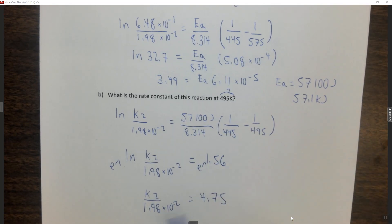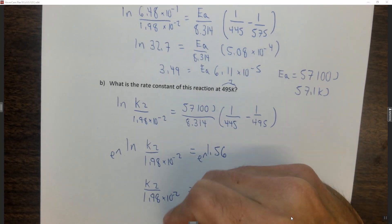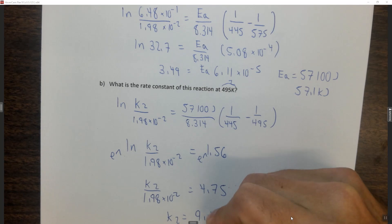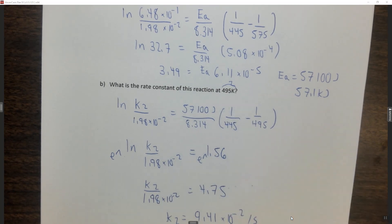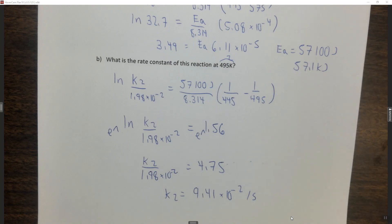We then just cross multiply these two numbers together, and we get that k2 is equal to 9.41 times 10 to the minus 2, and that's per second. So these are kind of pain in the butt math problems, but this is the two-point Arrhenius equation, which does allow us to find the activation energy, and finding the activation energy is very useful. There's also a graphical way to do that, that is described in your textbook.